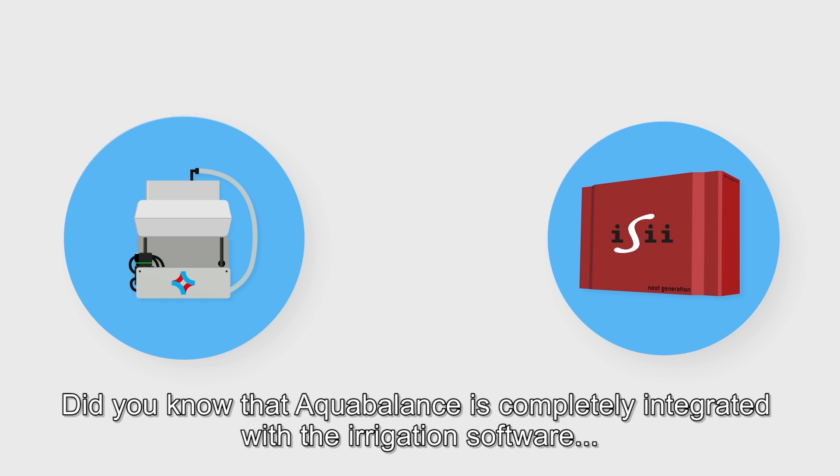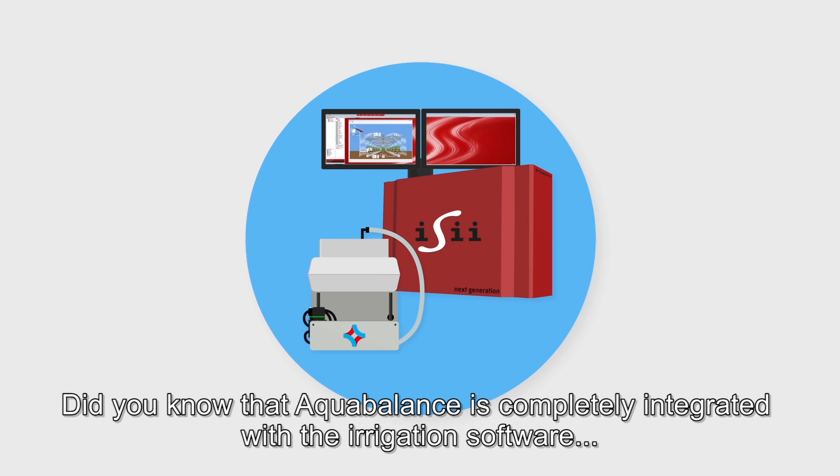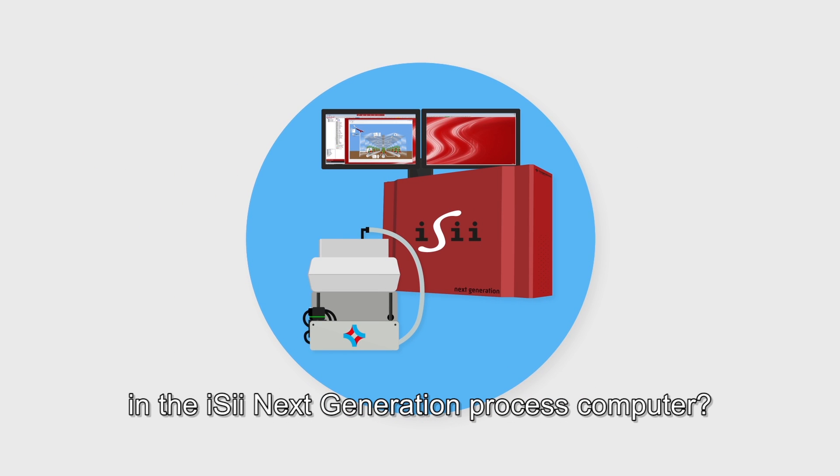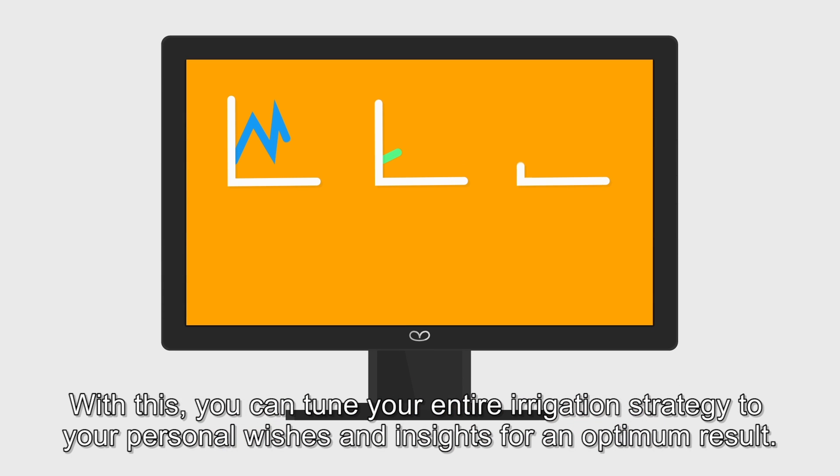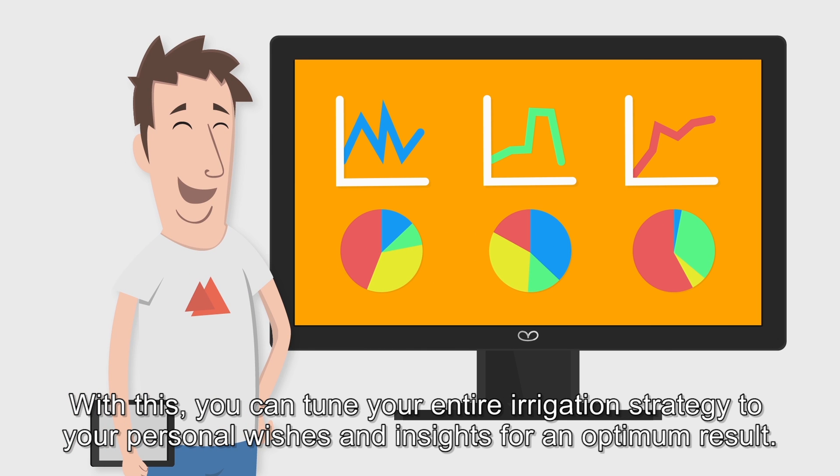Did you know that Aqua Balance is completely integrated with the irrigation software in the easy next-generation process computer? With this, you can tune your entire irrigation strategy to your personal wishes and insights for an optimum result.